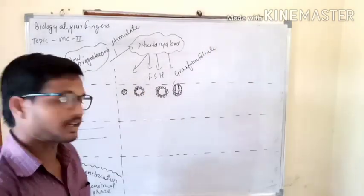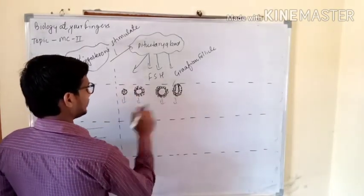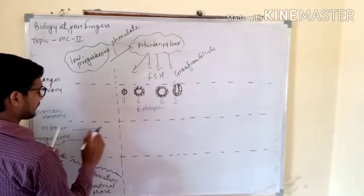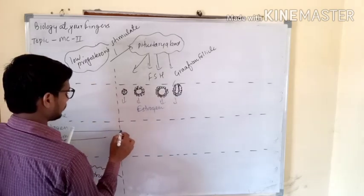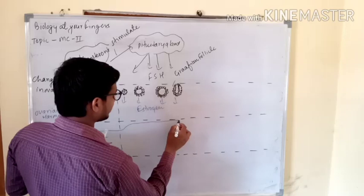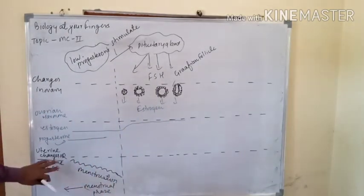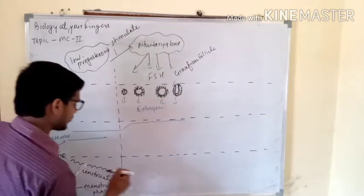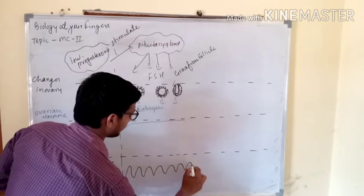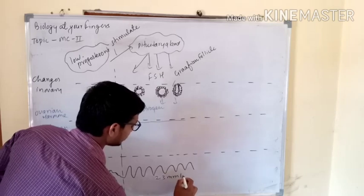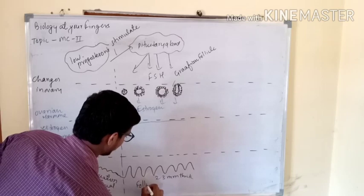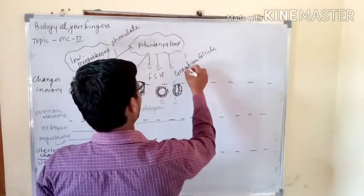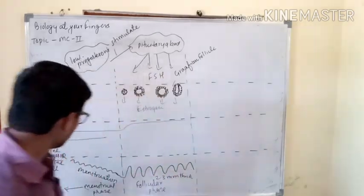Now this Graafian follicle will release estrogen hormone. In the beginning there was very low estrogen, but now the level of estrogen has increased. As discussed, the uterine wall had broken, and now due to the release of estrogen, the uterine wall will become thicker — it becomes 2 to 3 millimeters thick. This phase is known as the follicular phase. This is phase number 2, where the level of estrogen is very high.